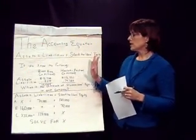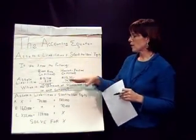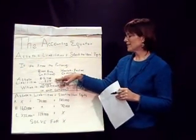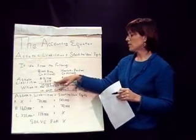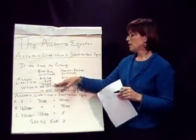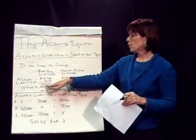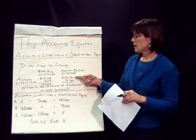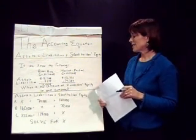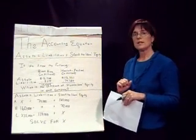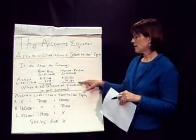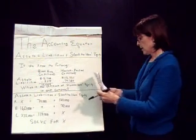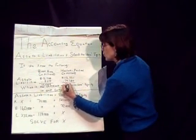If we know in a business what one of these groups are, we can figure out what the other is. In Best Buy, we had assets of $12,758,000 and liabilities of $8,274,000. All we need to do is subtract to get the $4,484,000 that must be stockholders' equity. In Hewlett Packard, if they had assets of $113,331,000 and liabilities of $74,389,000, all we need to do is subtract to get their stockholders' equity of $38,942,000.